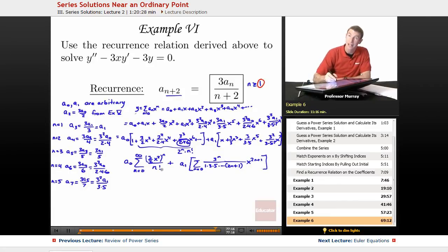What is worth it is to notice that this series on the left is exactly like the series for E to the X. Remember that was X to the N over N factorial. And so what we have here on the left is A0 times E to the 3 halves X squared.